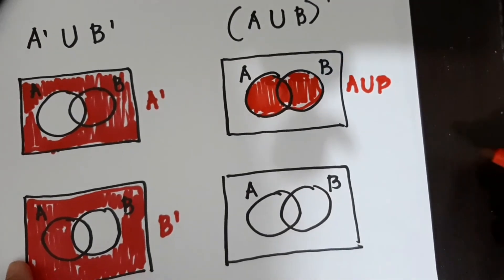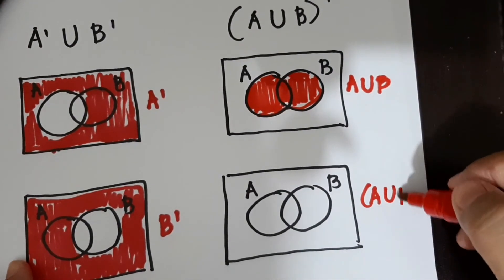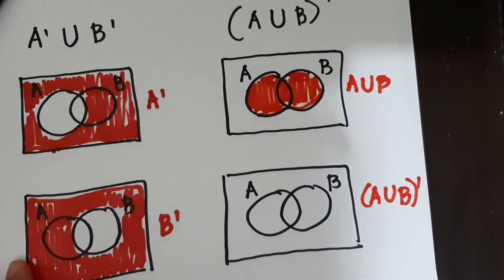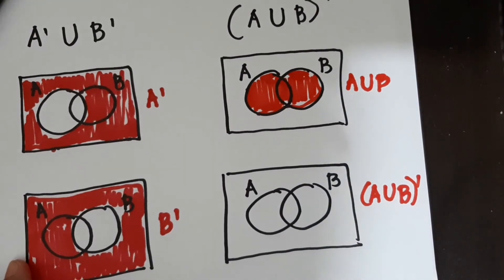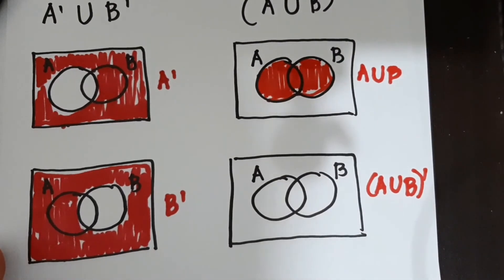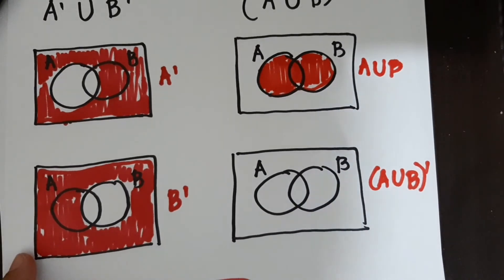And then, kukunin na natin yung not. The union of A and B. The complement of the union of A and B. Ganon.